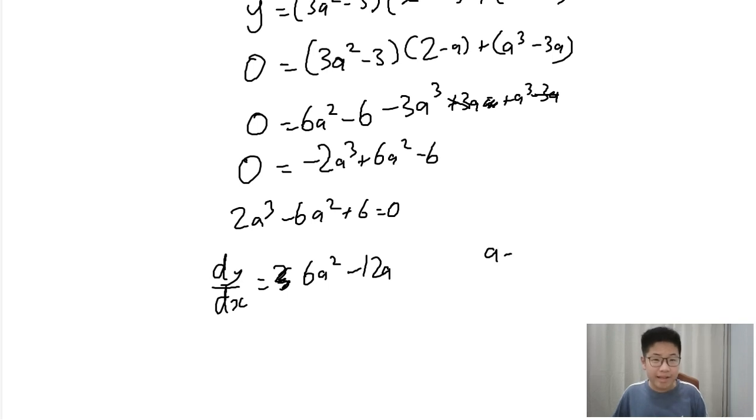So a equals 0 and 2, where the gradient is 0. So now we need to do a second derivative.